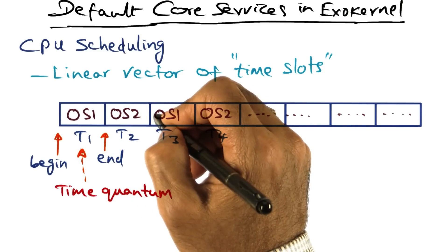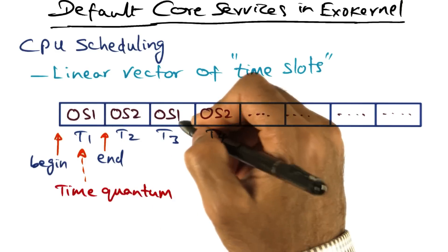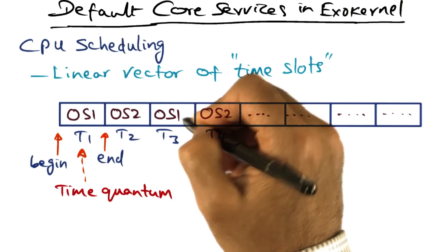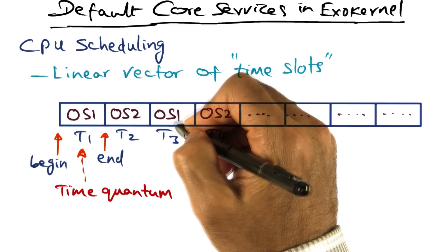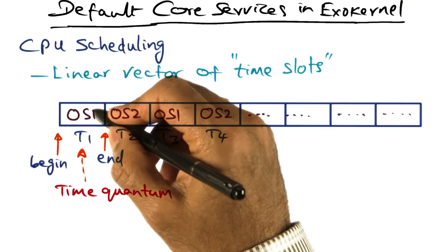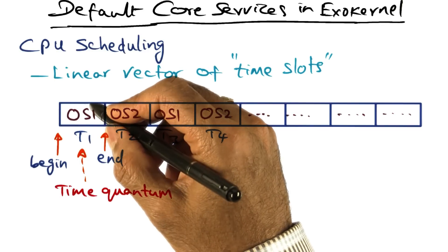And it will take time off of OS1 the next time it is scheduled. So there's a penalty associated with exceeding the time quantum. The time quantum is bounded.